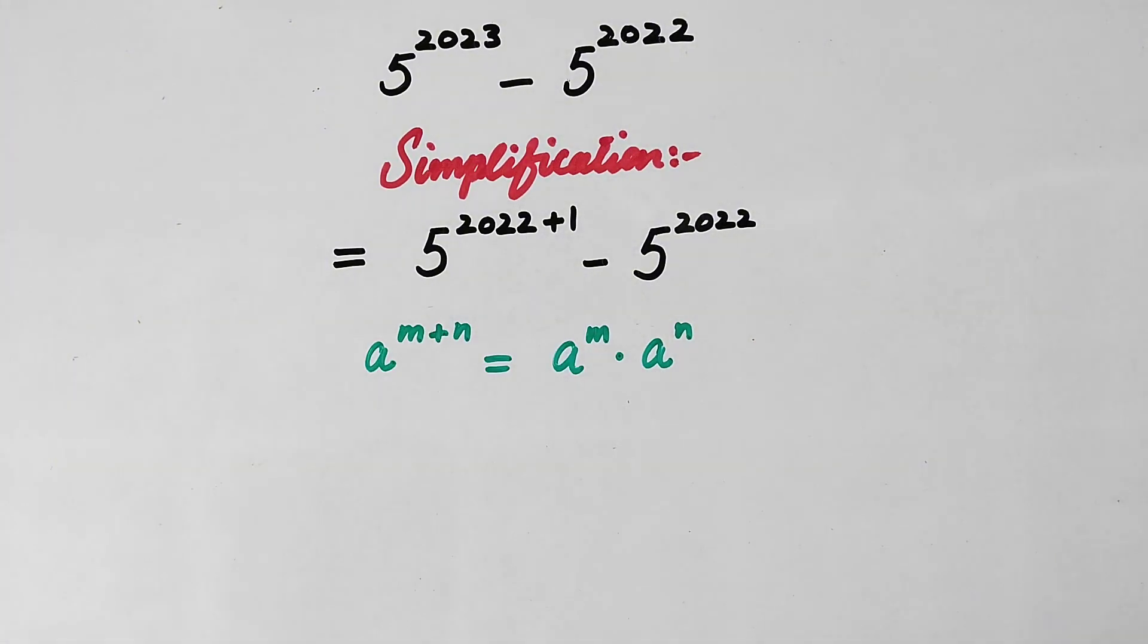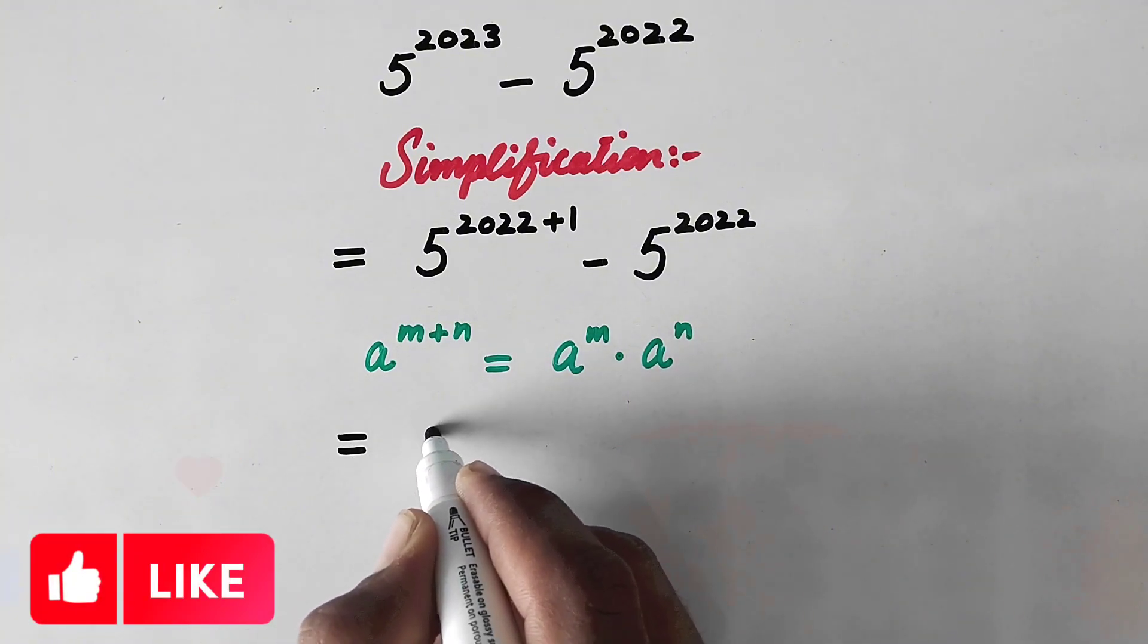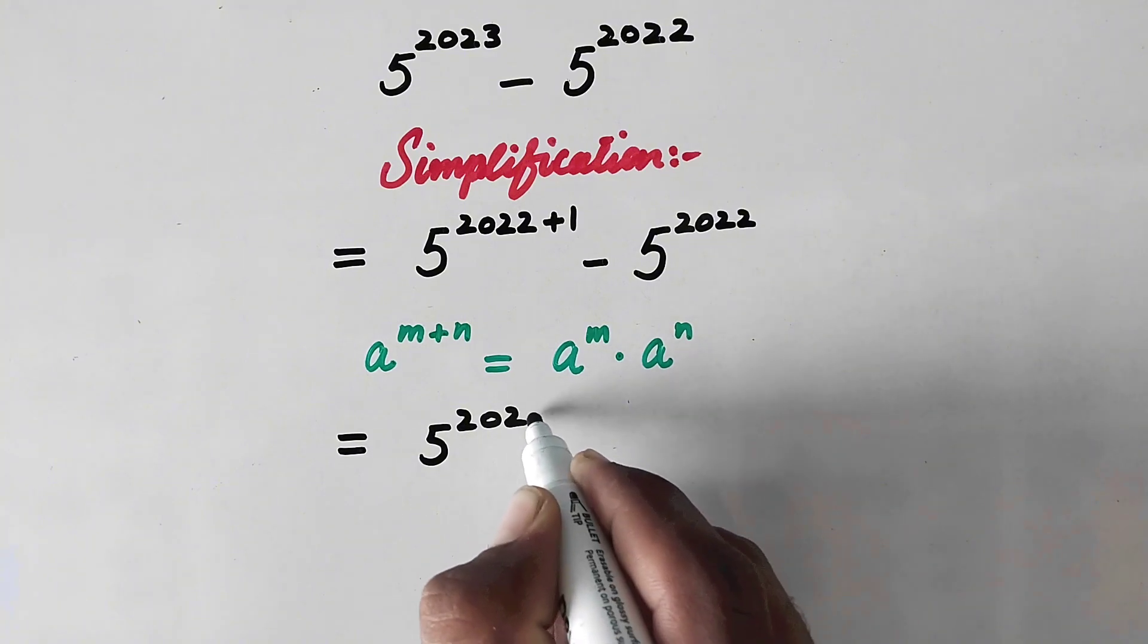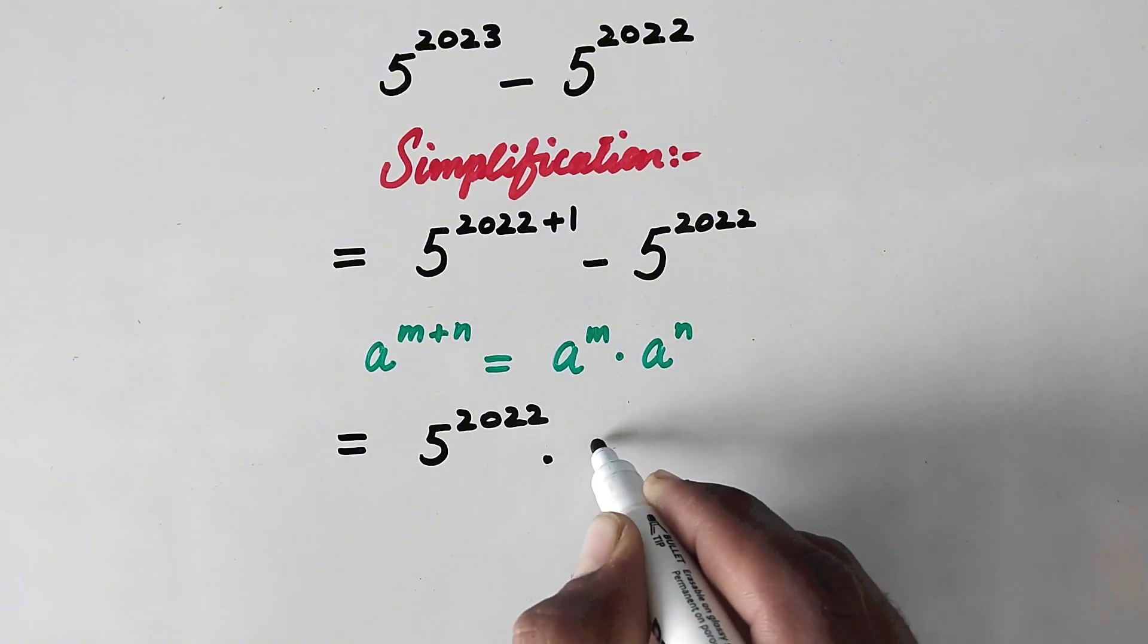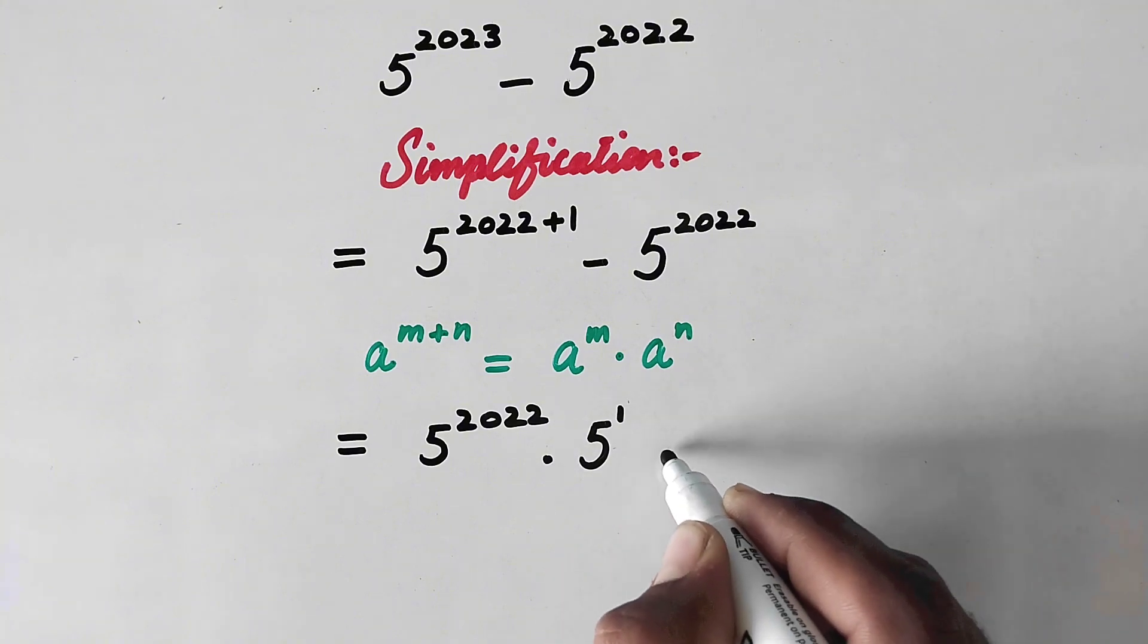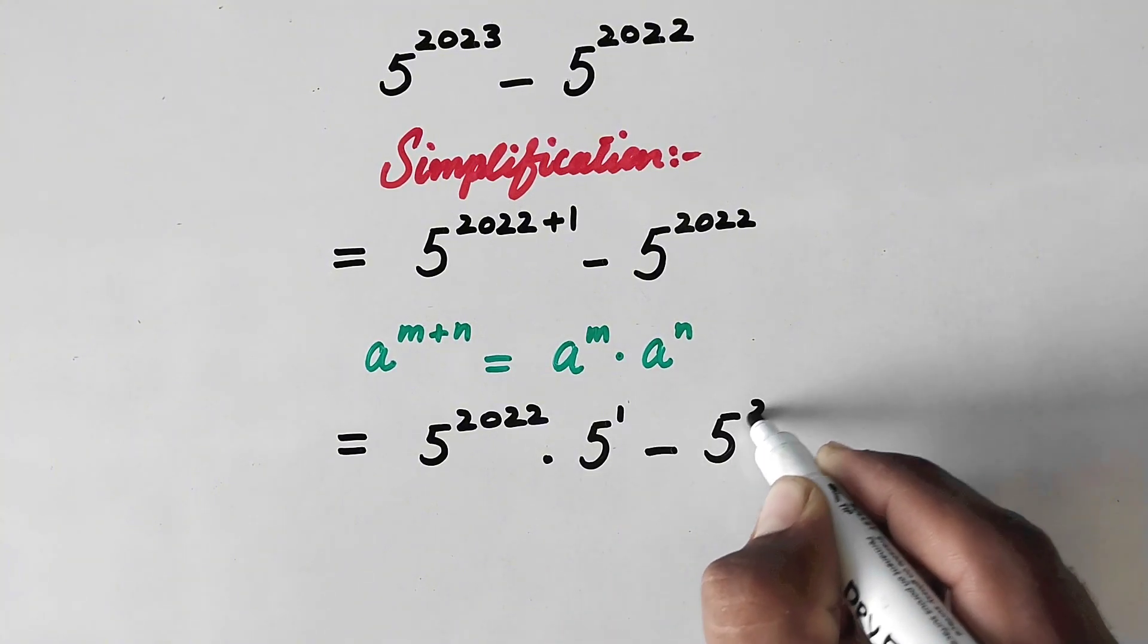we will write it equal to 5 raised power 2022 times 5 to power 1 minus 5 raised power 2022.